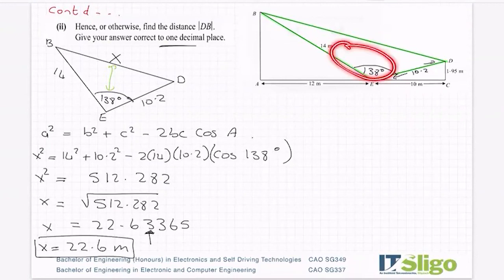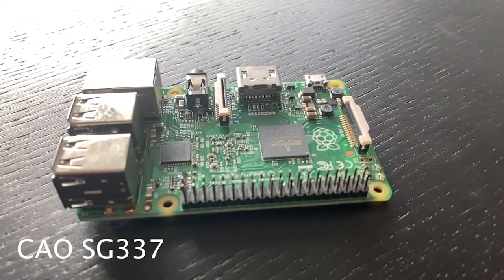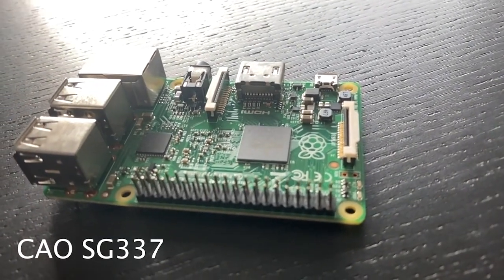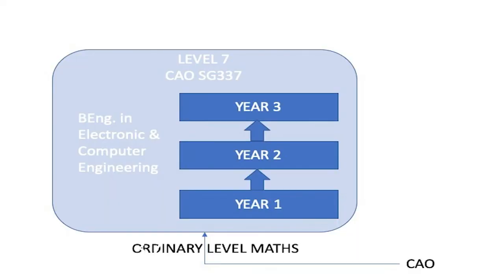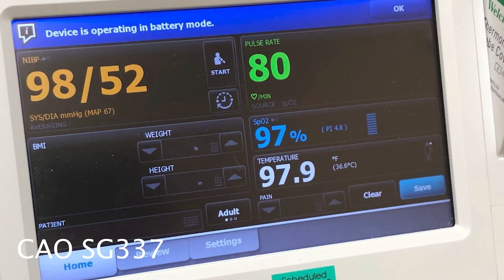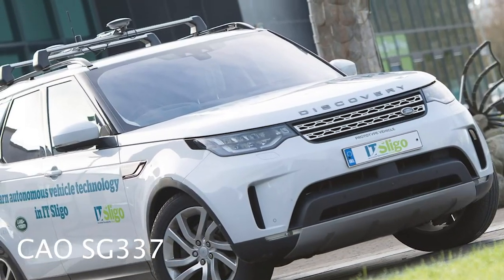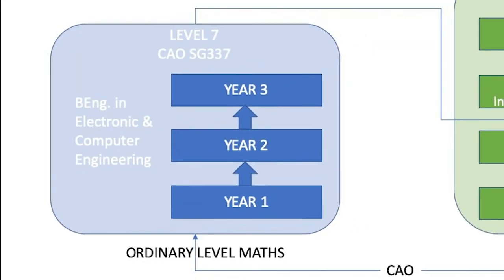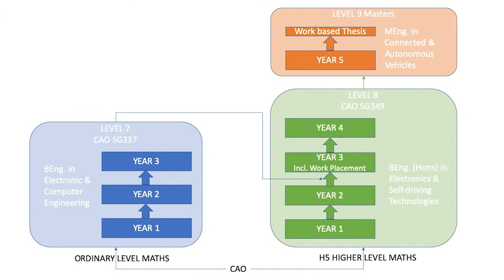A lot of right-angle trig in that question, and then at the end a little bit of non-right-angle trig. If you're interested in technology or engineering but not doing higher-level maths, why not consider our Level 7 in Electronic and Computer Engineering? It's a three-year programme looking at the design and development of embedded electronic systems — medical devices, consumer devices, and controlled systems for road safety. You can then progress to the Level 8 in Electronics and Self-Driving Technologies, and from there to the Masters. Check out the link below for more information.